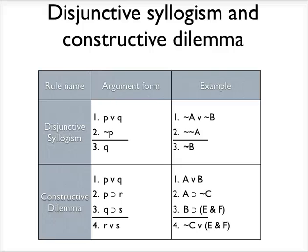All right, this is part three of the introduction to proofs. There are two more valid rules of inference that I have to talk about, and that's disjunctive syllogism and the constructive dilemma.